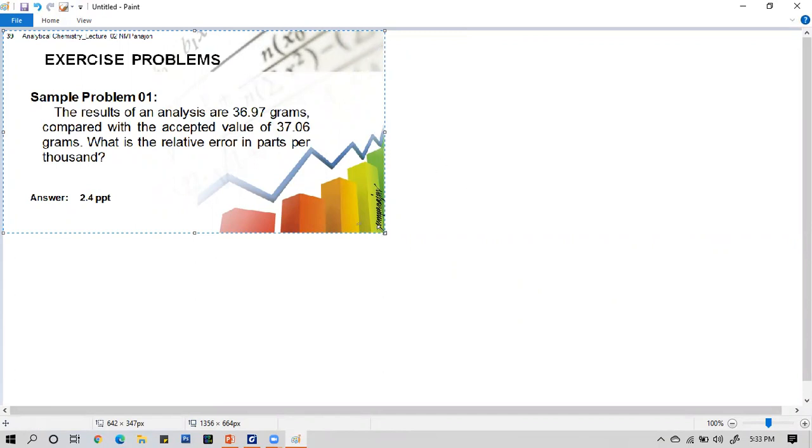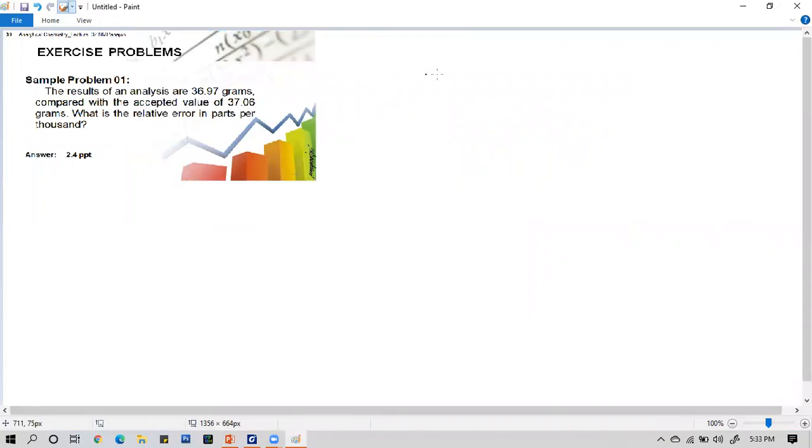We all know that the formula for relative error is RE equals to absolute value of absolute error all over the standard value times 1000. The formula expands to: relative error equals measured value minus standard value, absolute value, all over standard value times 1000.